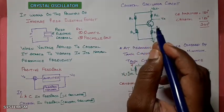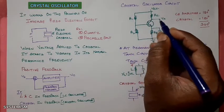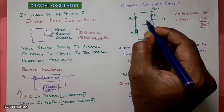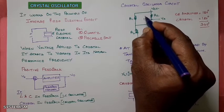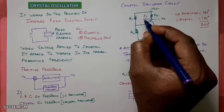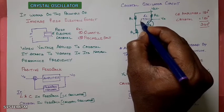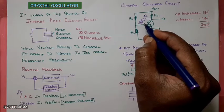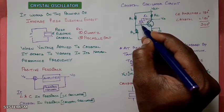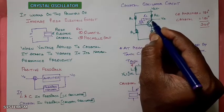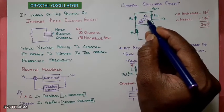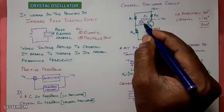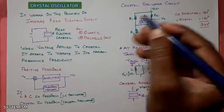This is an amplifier. From the output, we are going to take the feedback. From the output, we are taking a feedback and connecting a coupling capacitor, and then it is connected with the crystal. So you have connected a crystal. From the output, we have taken it and connected it to the input. If you give feedback like this, then this amplifier will be converted into an oscillator. If you connect a crystal, then this is called a crystal oscillator.